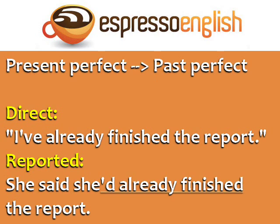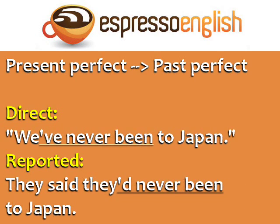Present perfect verbs become past perfect. Direct: 'I've already finished the report.' Reported: 'She said she'd already finished the report.' Here's another example of present perfect to past perfect. Direct: 'We've never been to Japan.' Reported: 'They said they'd never been to Japan.'